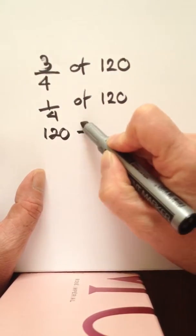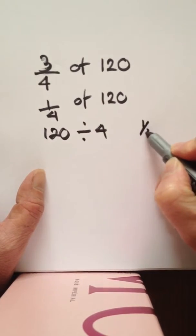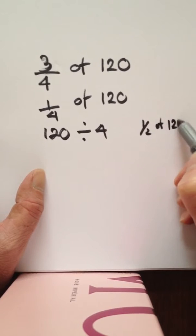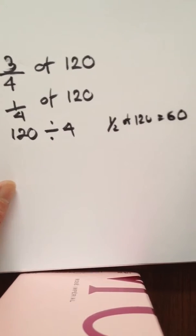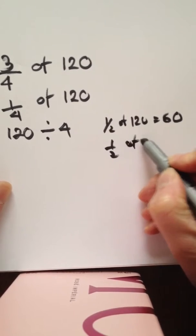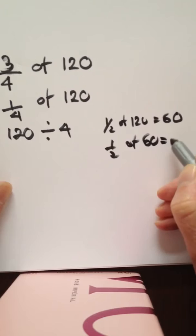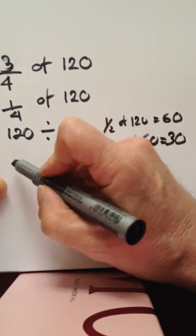...divided by four. There's a number of ways we can do this. We could half 120 and get 60, and we could half 60 to get 30, because a half of a half gives us a quarter.